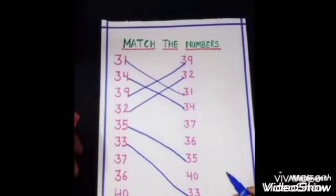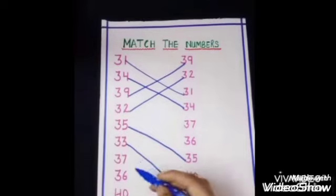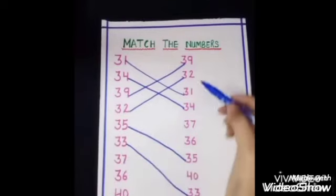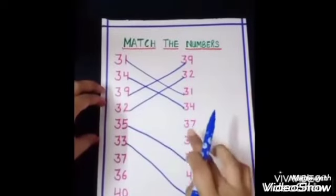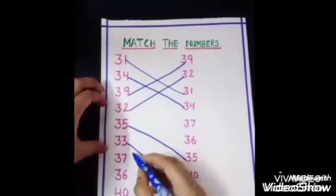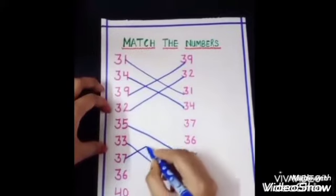Next number is 37, 37. Where is 37 in another line? Where is 37? Yes, this is 37. So match it.